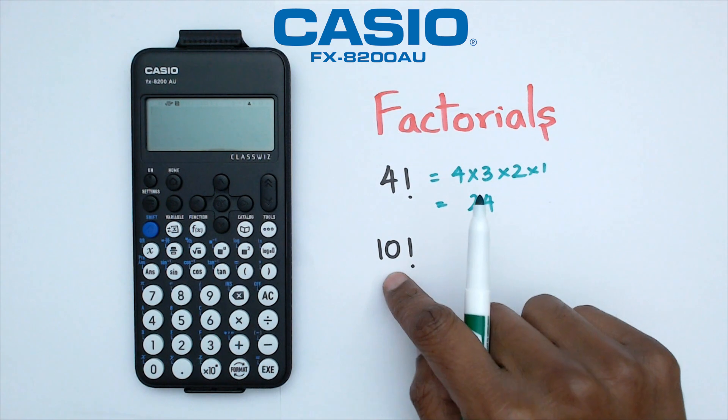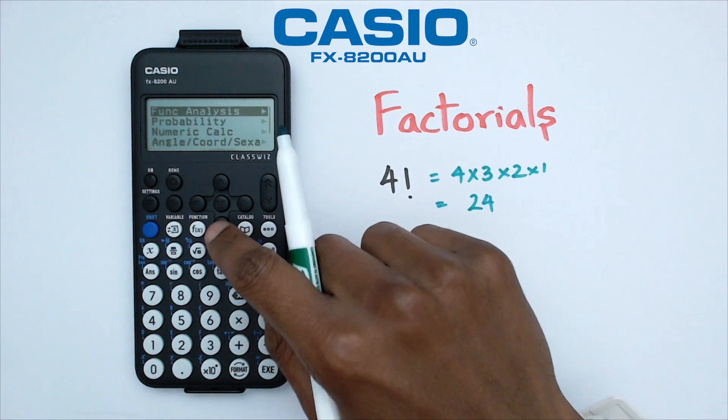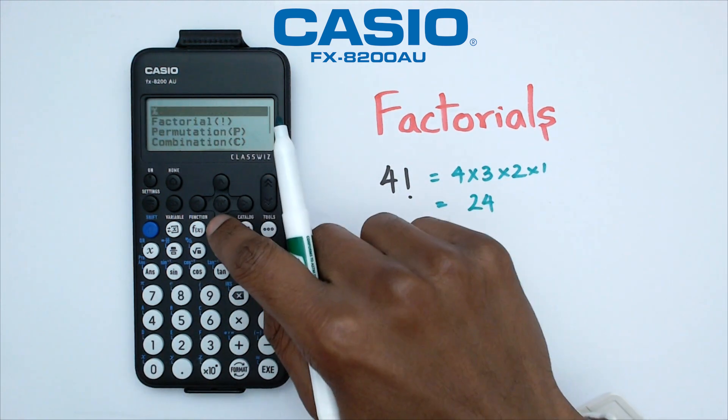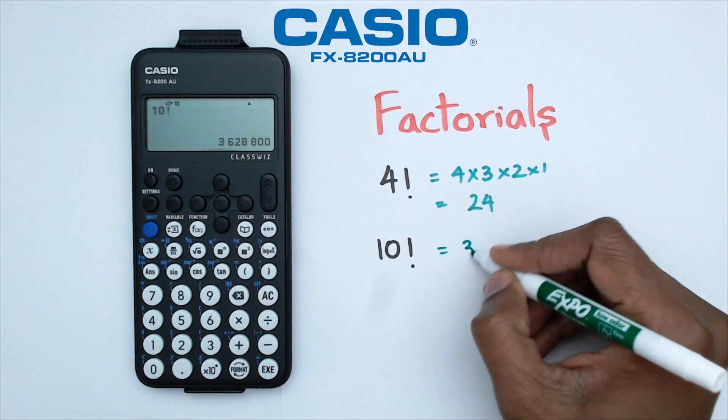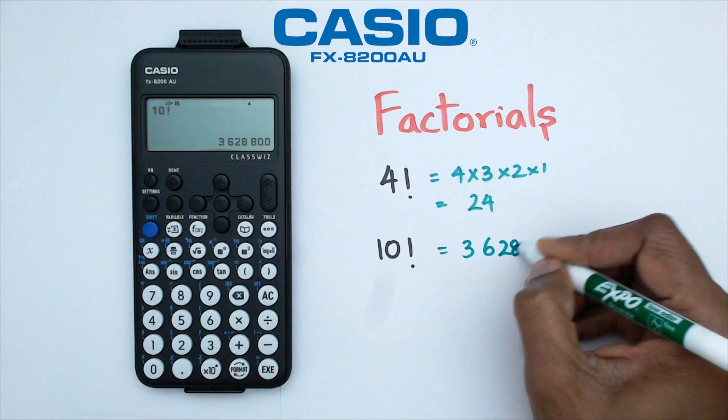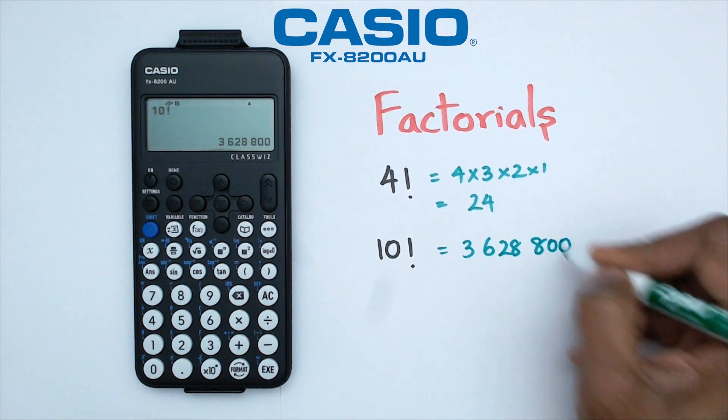So if I want to work out 10 factorial, I'm just going to type 10, click on catalog, go to probability, click on factorial and press exe. And that's going to give me 3,628,800.